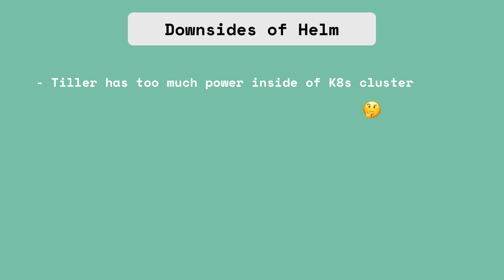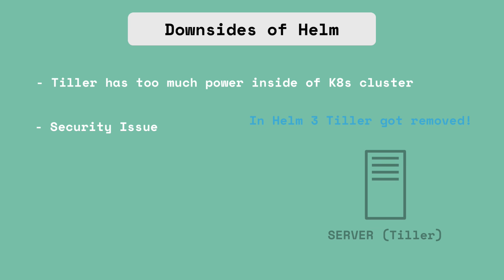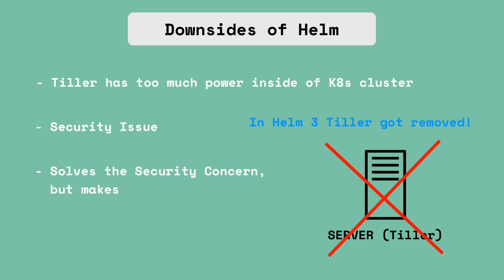However, this setup has a big caveat: Tiller has too much power inside the Kubernetes cluster. It can create, update, and delete components, giving it excessive permissions, which creates a significant security issue. This was one of the main reasons why in Helm version 3, the Tiller component was removed. It's now just a simple Helm binary. While this solves the security concern, it loses or makes the release management feature more challenging. This is important to mention because many people have heard of Tiller, and when deploying Helm version 3, they shouldn't be confused that Tiller is no longer present.